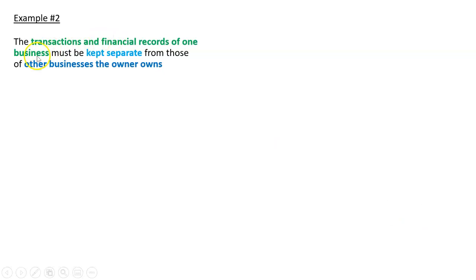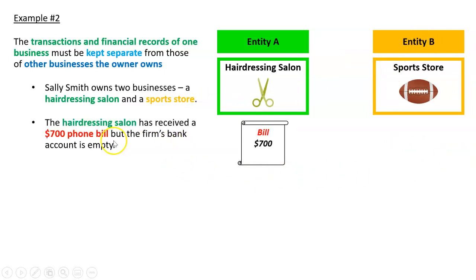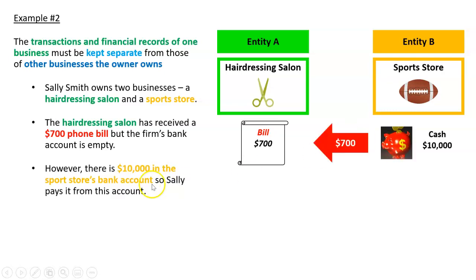Example two: we must keep the transactions and financial records of one business separate from any other businesses the owner owns. Sally Smith owns two businesses — a hairdressing salon, Entity A, and a sports store, Entity B. The hairdressing salon received a $700 phone bill, but its bank account is empty. So Sally transfers $10,000 from the sports store's bank account over to the hairdressing business to pay for the salon's phone bill.